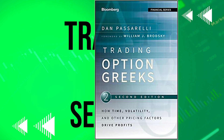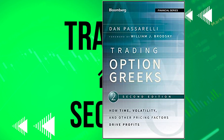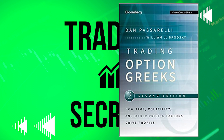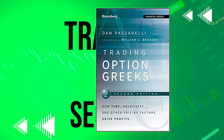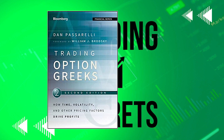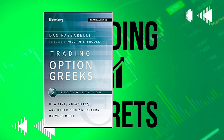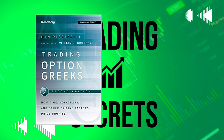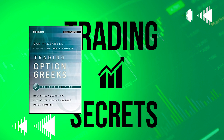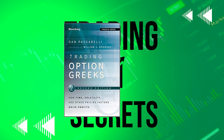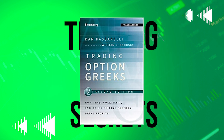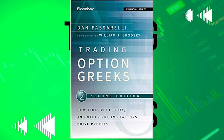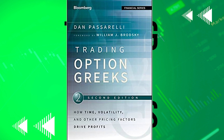Trading Options Greeks by Dan Passarelli is a book that explains how various pricing factors such as time, volatility, and others can be used to drive profits in options trading. The book covers the use of the Greeks — delta, gamma, theta, vega, and rho — which are essential metrics used to measure and manage risk in options trading. The book is aimed at both experienced and novice traders looking to gain a deeper understanding of options trading strategies.